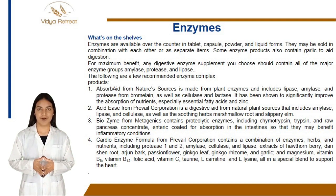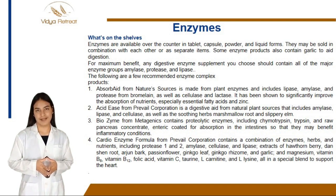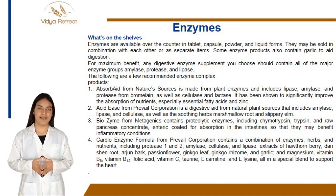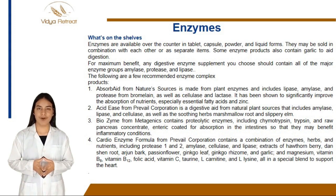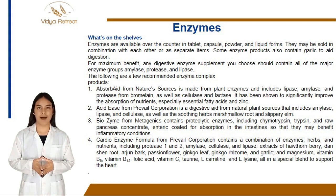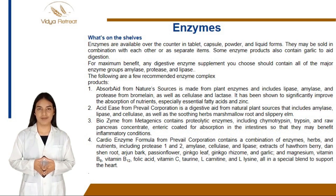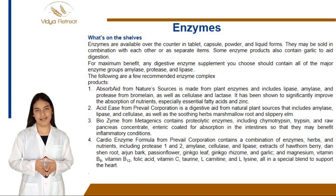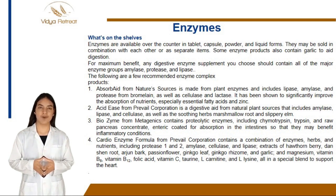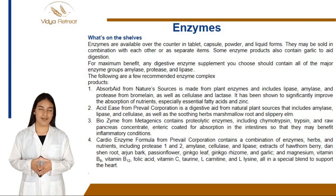Acid Ease from Prevail Corporation is a digestive aid from natural plant sources that includes amylase, lipase, and cellulase, as well as the soothing herbs marshmallow root and slippery elm. Biozyme from Metagenics contains proteolytic enzymes including chymotrypsin, trypsin, and raw pancreas concentrate, enteric coated for absorption in the intestines so that they may benefit inflammatory conditions.